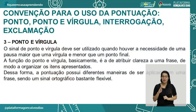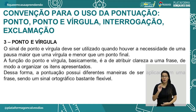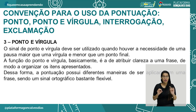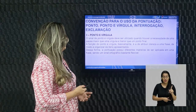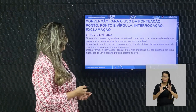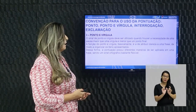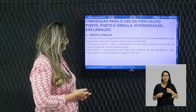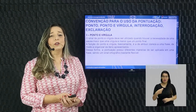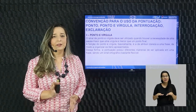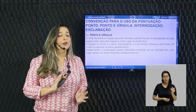O ponto e vírgula deve ser utilizado quando houver a necessidade de uma pausa maior que a vírgula e menor que o ponto final. A função do ponto e vírgula, basicamente, é a de atribuir clareza a uma frase, de modo a organizar os itens apresentados. É um sinal ortográfico bastante flexível, situado entre o ponto final e a vírgula.